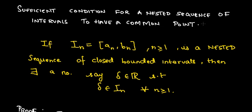Having said that not all nested sequences of intervals have a common point, I am now stating that there is a sufficient condition under which there will be a common point. So if the interval sequence IN is a closed interval [AN, BN] for all N ≥ 1, and this is a nested sequence of closed bounded intervals, then there exists a real number delta such that delta belongs to IN for all N.